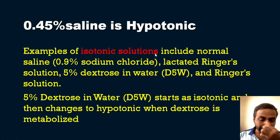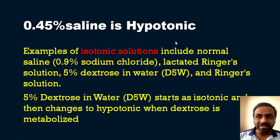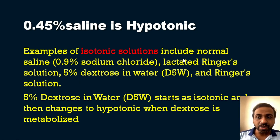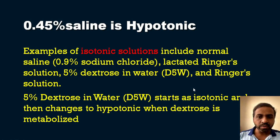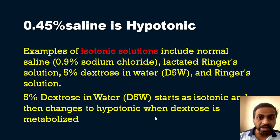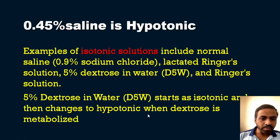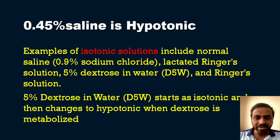Isotonic solutions include normal saline, lactated Ringer's solution, Ringer's solution, and 5% dextrose in water. One important point: D5W starts as an isotonic solution when administered, but becomes a hypotonic solution after the dextrose is metabolized. That is the peculiarity of D5W — it is administered as isotonic but acts as hypotonic after metabolism.